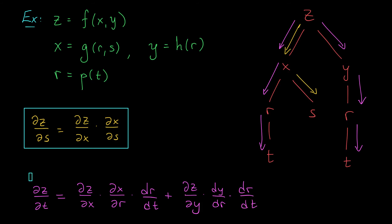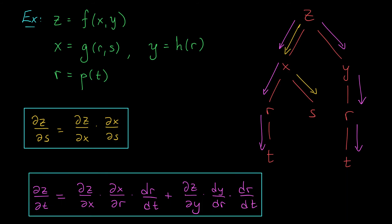And that, my friends, is pretty much it. Now you might be wondering why we computed a partial derivative of z with respect to t when there seems to be only one independent variable at the bottom. Well, that's true, but don't forget about s. S stops at level two, but it's the last variable in a particular branch. So z depends on both s and t.